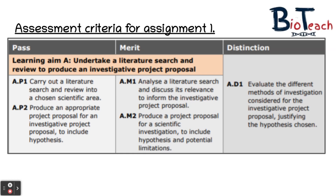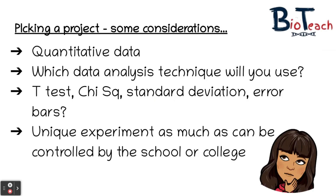Before you submit your proposal you also need to think of a hypothesis, which helps your teacher ascertain your understanding of the project and your expectations. One major issue students have is picking an appropriate project. You need something where you can get quantitative data that you can analyse using statistical tests such as the Student's t-test or chi-squared. The specification also suggests standard deviation is a suitable analytical method — gathering means of samples, performing a standard deviation test and plotting error bars could get you the grades you need.